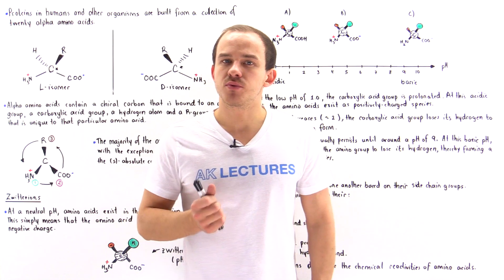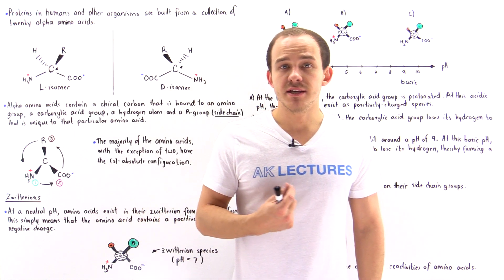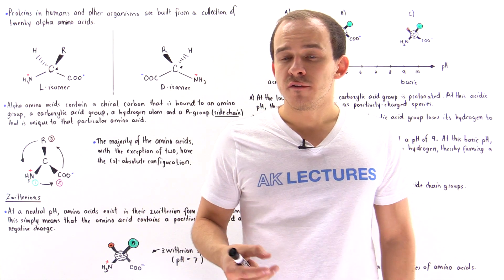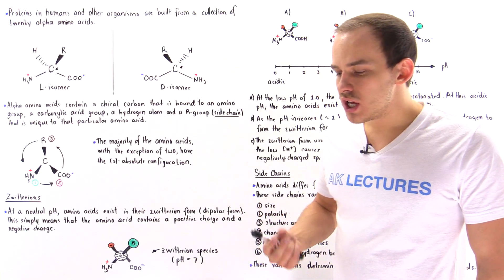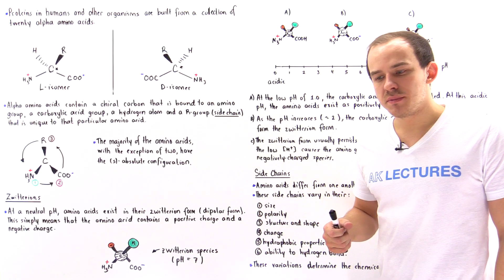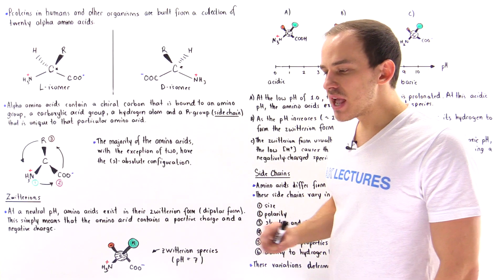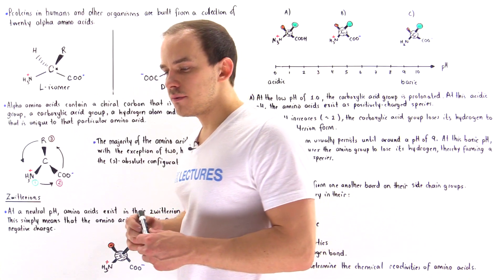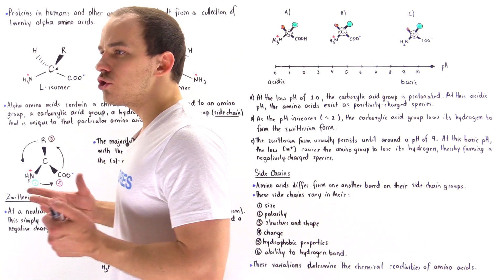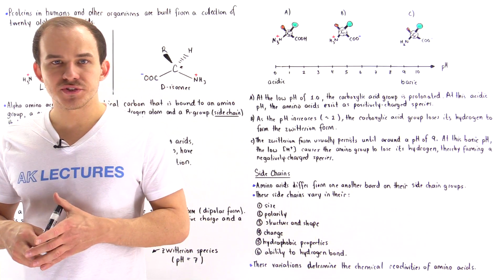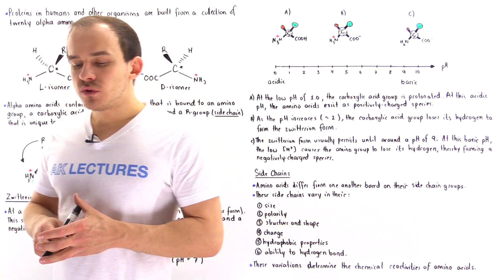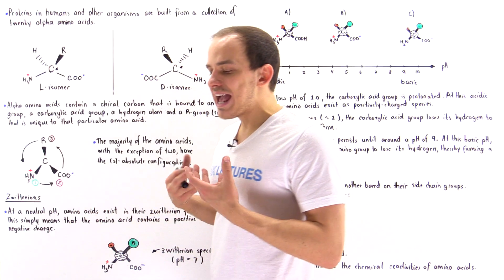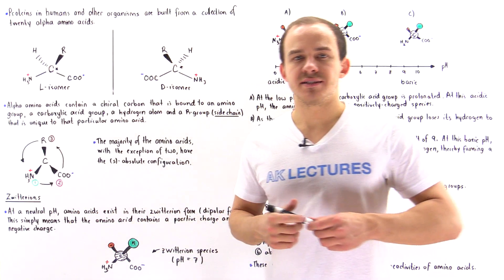All the different types of proteins found inside our body are built from a collection of 20 different types of amino acids, and all of these types of amino acids are known as alpha amino acids. So let's begin by discussing what an alpha amino acid is.